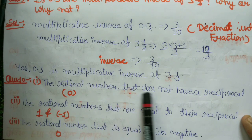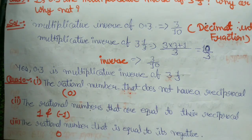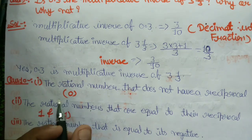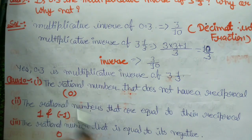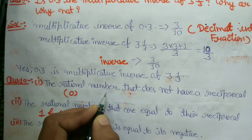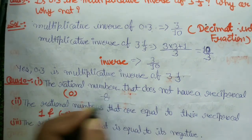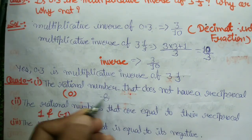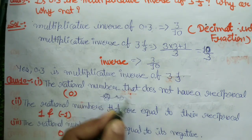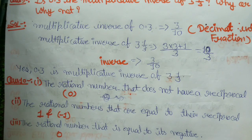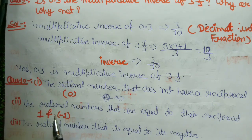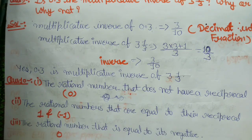Question number 10: The rational number that does not have a reciprocal — we have to tell which rational number has no reciprocal. The answer is 0, because there is no reciprocal of 0. If we write reciprocal of 0 it would be 0 upon 0, which is undefined, so 0 has no reciprocal.